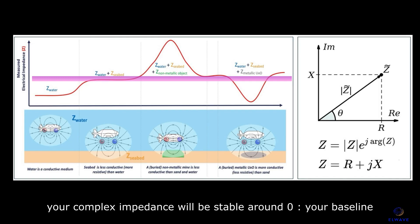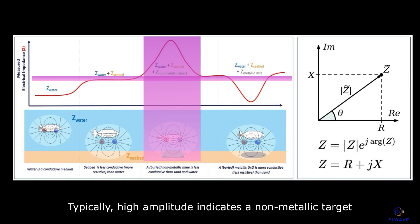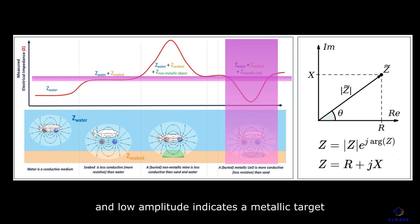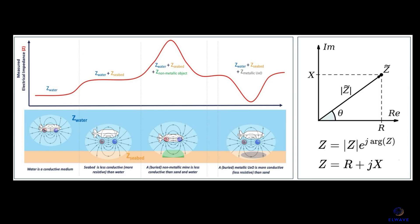Maintain a constant survey altitude and speed. Your complex impedance will be stable around zero, your baseline. Typically, high amplitude indicates a non-metallic target, and low amplitude indicates a metallic target.